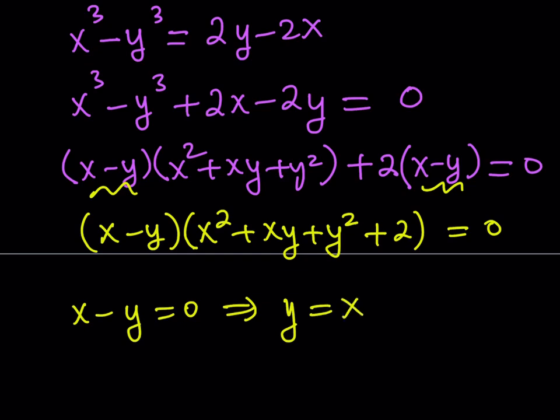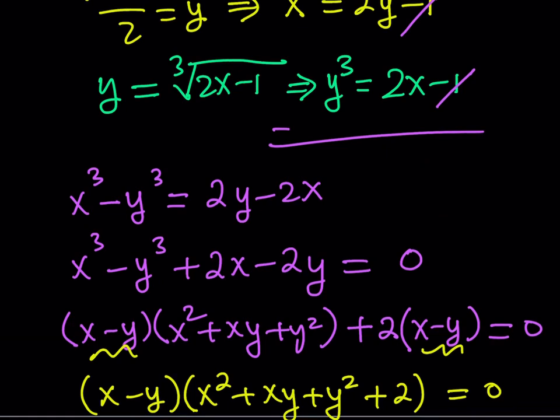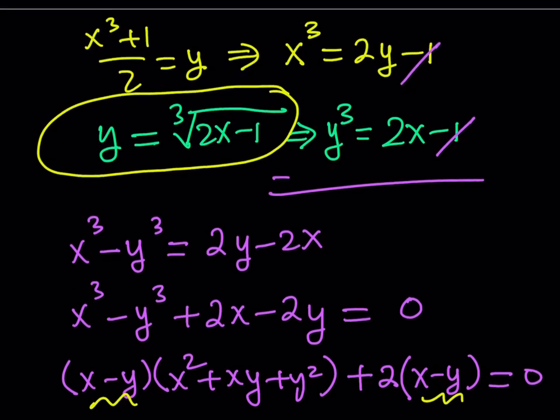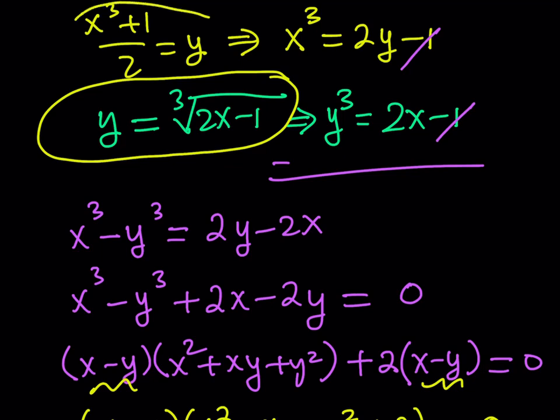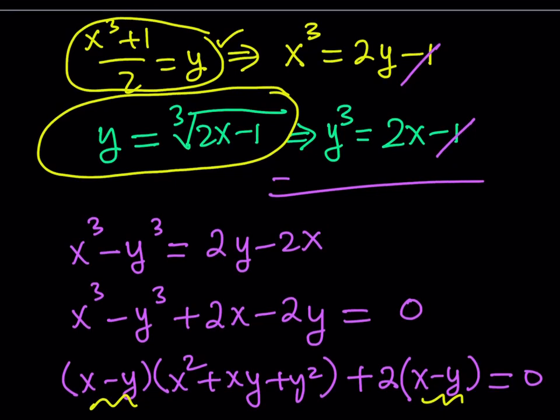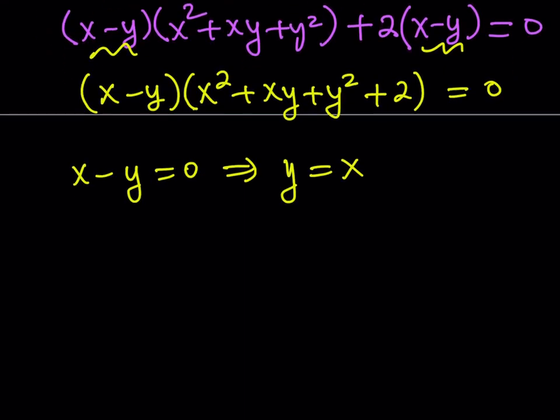But what is y? Well, remember at the beginning, we replaced something with y and we got our system from there. So we're going to back substitute, replace y with this. You don't have to do it that way. You can also replace y with this, which actually makes more sense because who wants to deal with the radical? Come on, we were just trying to get rid of it. So let's go ahead and use the first one, which is y equals x cubed plus 1 over 2. So that's what I'm going to replace y with. So x cubed plus 1 over 2 replaces y and that happens to equal x.